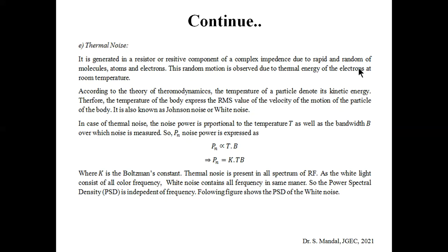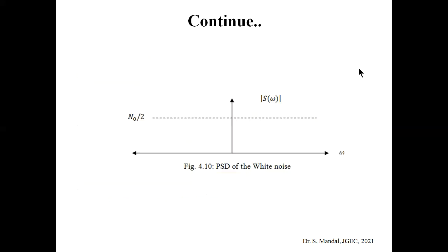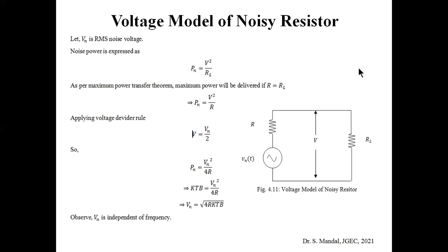White noise contains all frequency components at equal power — just as white light consists of all colors. The power spectral density of thermal or white noise is constant (N0/2) and independent of frequency. To summarize: transit time noise is dominant at high frequencies, flicker noise is dominant at low frequencies, but thermal noise dominates throughout the entire frequency region.